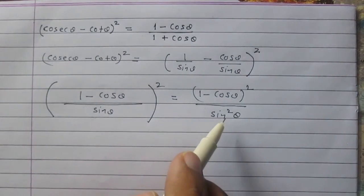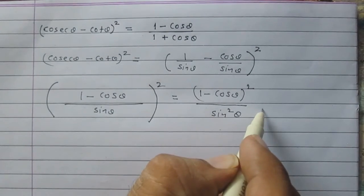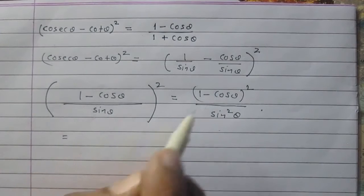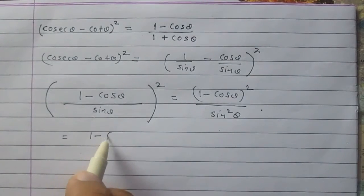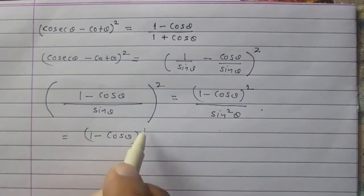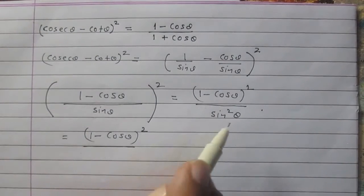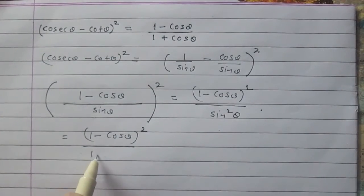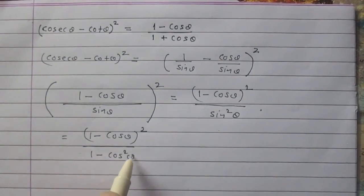We know that sin square theta is 1 minus cos square theta. So using this identity here we will get numerator as it is, 1 minus cos theta whole square, and sin square theta is 1 minus cos square theta.